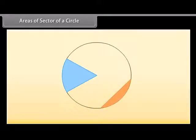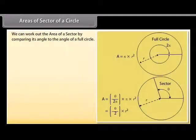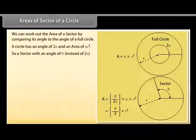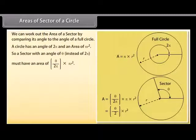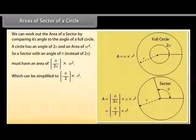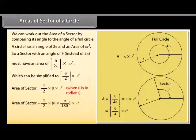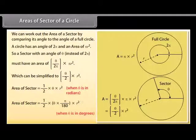There are two main slices of a circle: the pizza slice is called a sector, and the slice made by a chord is called a segment. We can work out the area of a sector by comparing its angle to the angle of a full circle. A circle has an angle of 2π and area πR². A sector with angle θ has area = (θ/2π) × πR² = (θ/2) × R². Area of sector = ½ × θ × R² when θ is in radians, or = (θ/360) × π × R² when θ is in degrees.